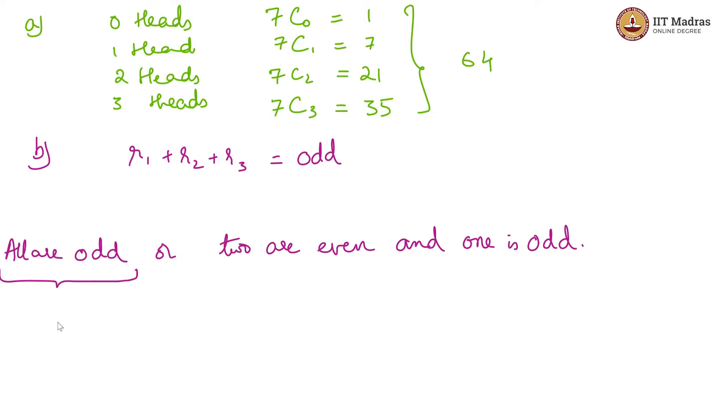All are odd. So, in the first result, we have three options, in the second result, we have three options and in the third result, we have three options because you have one, three, five, one, three, five, one, three, five in all of these.